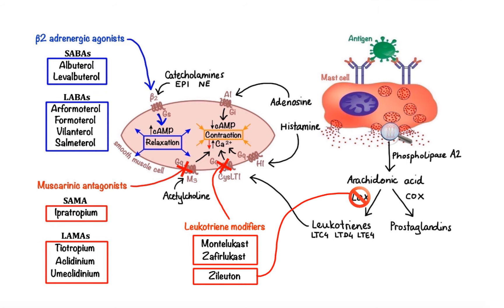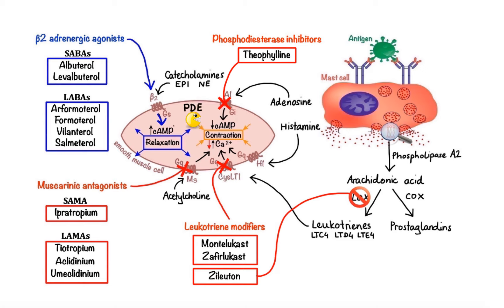Moving on to another pharmacotherapeutic option that directly affects contraction of bronchial smooth muscle cells — phosphodiesterase inhibitors. One of the most well-known drugs in this group is theophylline. Theophylline exerts its effects mainly through two distinct mechanisms: first, it binds to the adenosine A1 receptors and blocks adenosine-mediated bronchoconstriction. Secondly, theophylline targets phosphodiesterases, the enzymes responsible for breaking down cAMP in smooth muscle cells, by non-selectively inhibiting their activity, thereby contributing to bronchodilation.